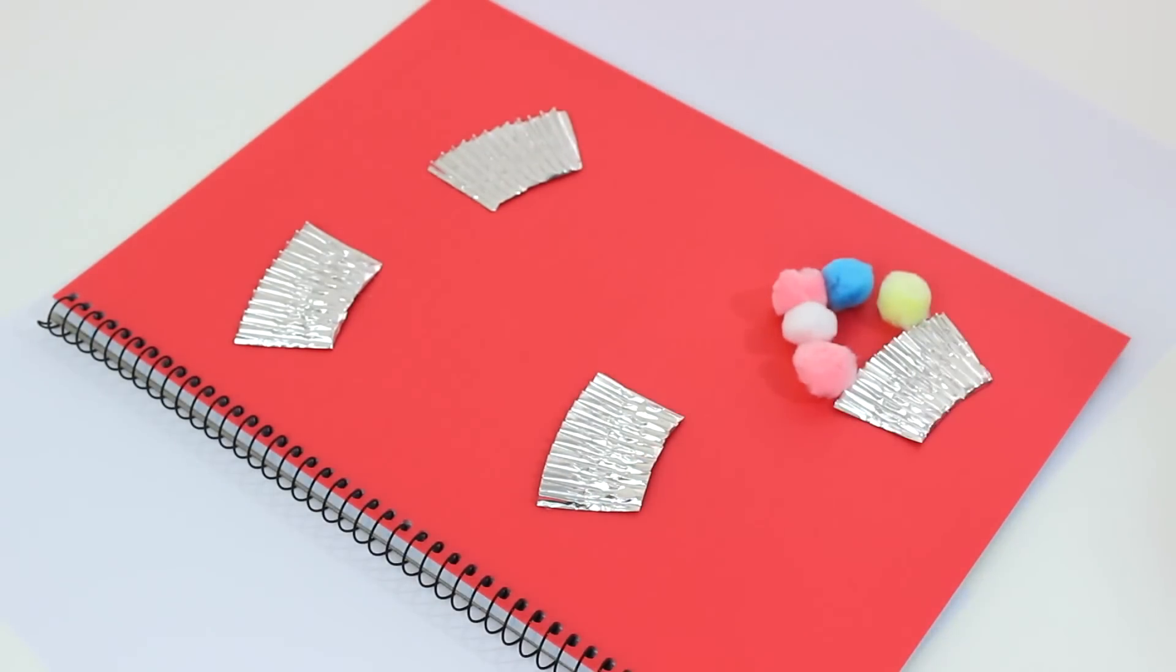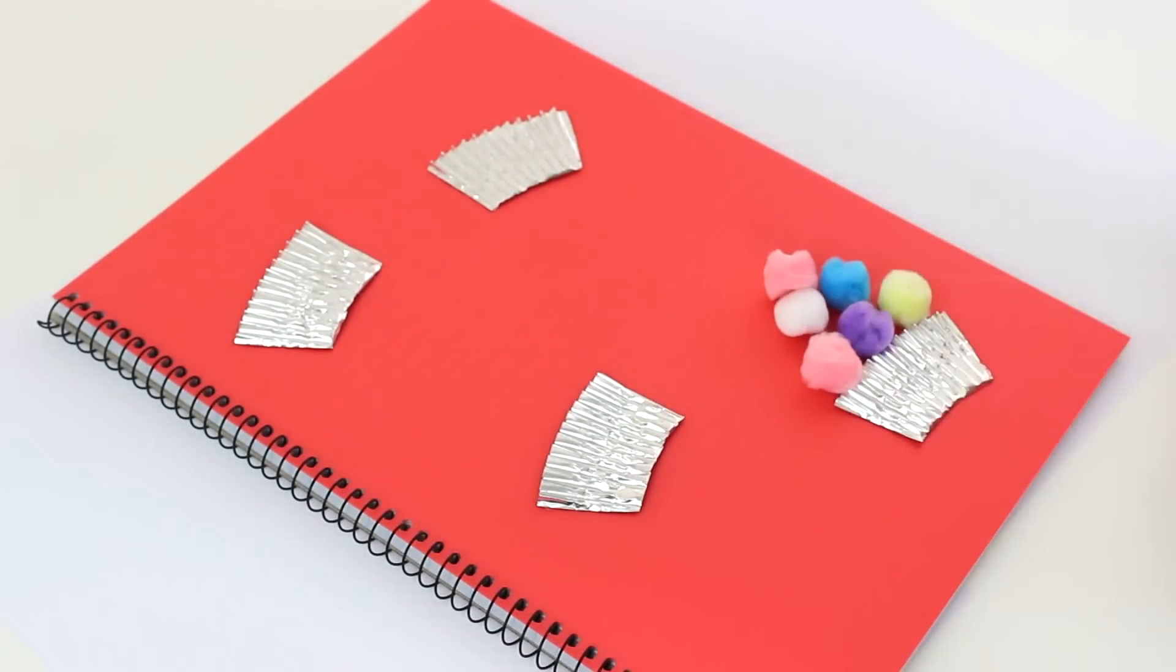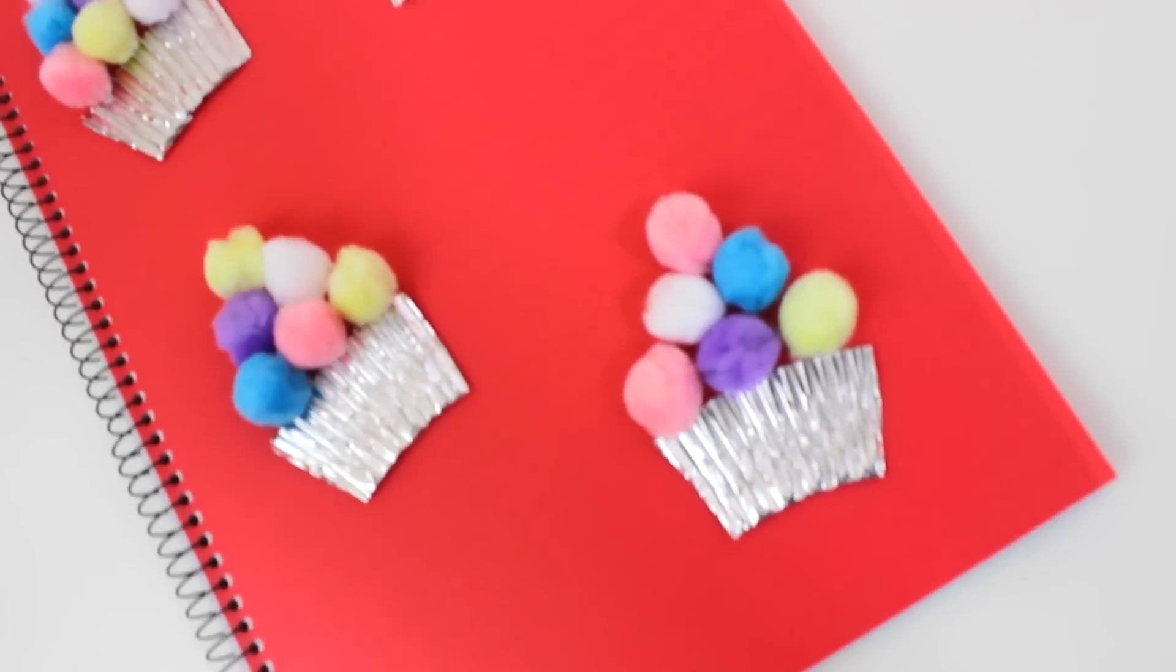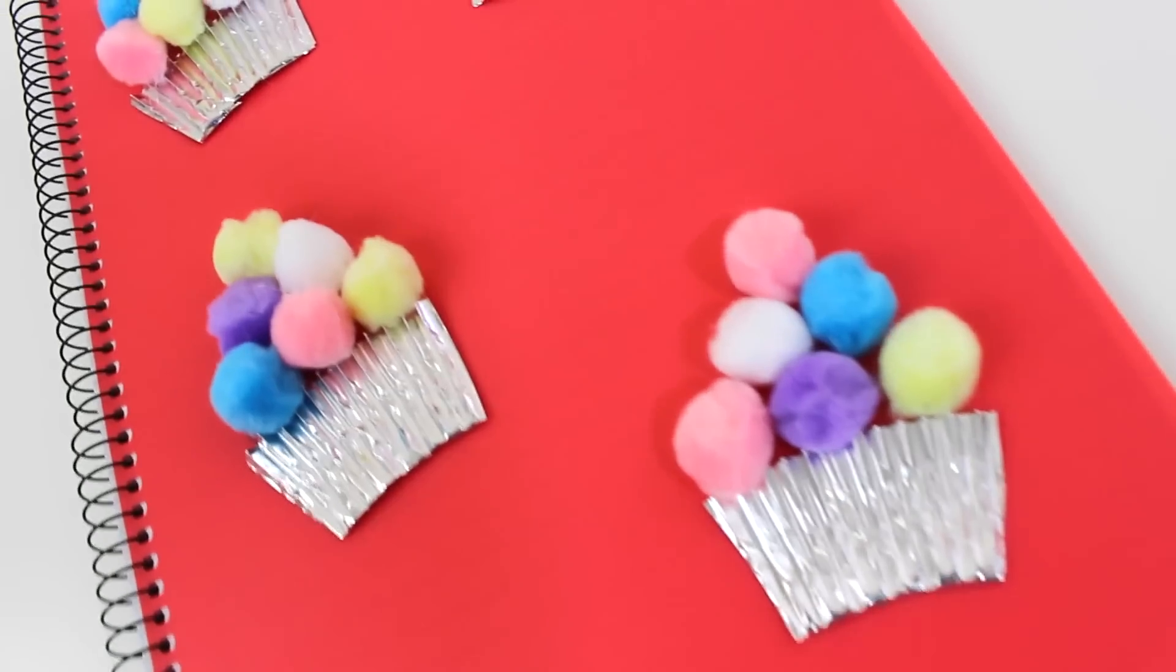And then I started gluing them down. I started by gluing them individually, but I found out when I went through and did the other ones that it's better to glue the book and do a big line at the bottom and stick them down, then glue another line and stick them down, and then glue another line. And that is your completed cupcake notebook.